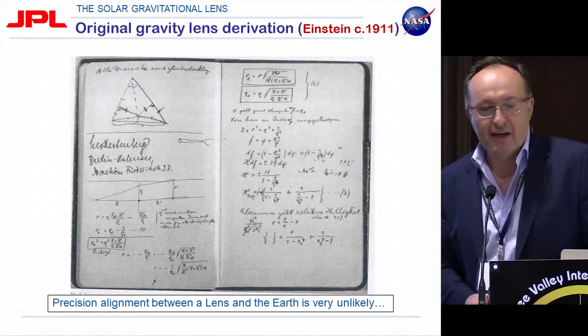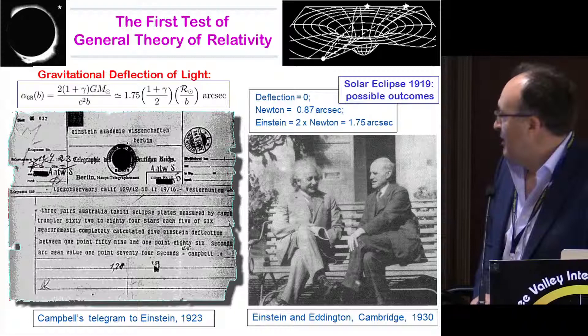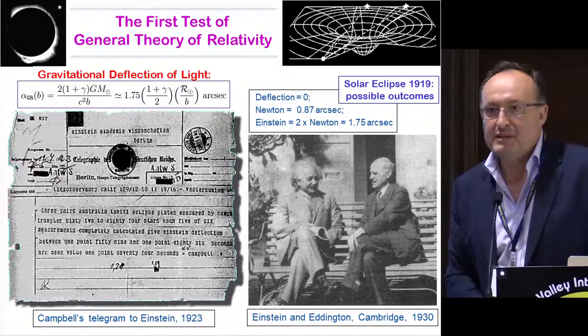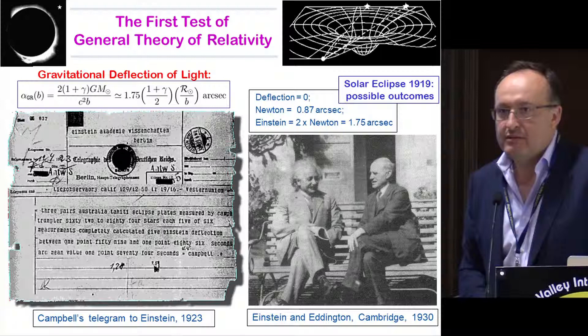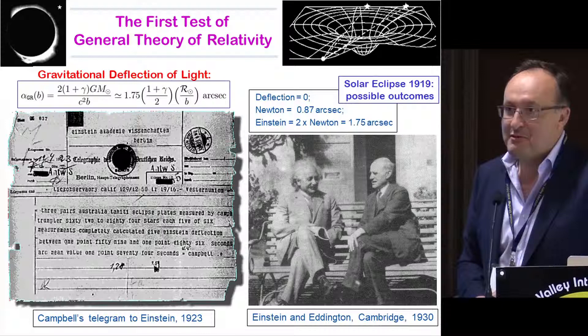Gravitational deflection of light actually became the first experiment conducted to test General Relativity. This is Einstein and Eddington sitting together in Cambridge in the 1930s. This was the first confirmation of General Relativity. This is a telegram from Campbell sent to Einstein suggesting that several experiments conducted during the solar eclipse confirmed the validity of General Relativity. That was almost 100 years ago.